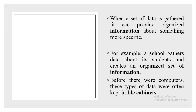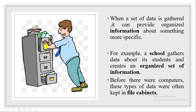Schools will ask things like what is your parents' name, what are your parents doing, what is your phone number, and so on. The school gathers data about its students and creates an organized set of information. Before there were computers, these types of data were often kept in file cabinets. We used these kinds of cabinets for storing the data collected in the school — all the details about the students.